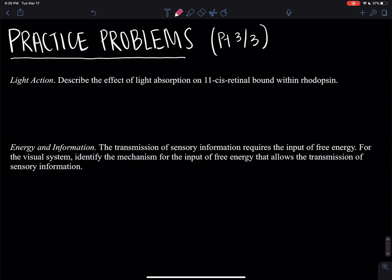For the energy and information question: the transmission of sensory information requires the input of free energy. Identify the mechanism for the input of free energy to allow the transmission of sensory information. The answer involves a chain reaction — free energy for the visual system comes from light. This light is absorbed by rhodopsin; 11-cis retinol is converted to all-trans retinol. Opsin is activated, thus activating the alpha subunit of transducin, converting GDP to GTP. The alpha subunit is released, activating cyclic GMP phosphodiesterase, which converts cyclic GMP to GMP. This is the transmission of the sensory information.